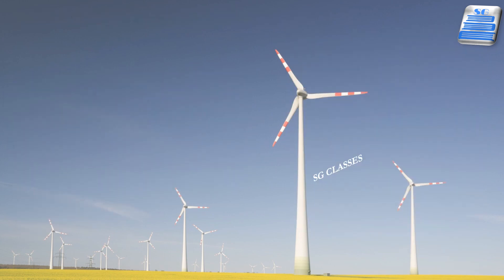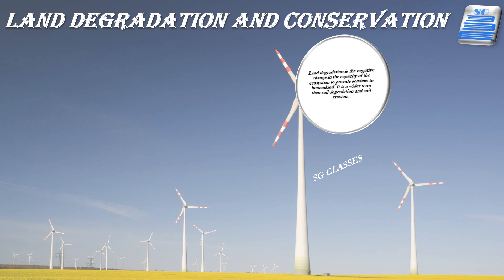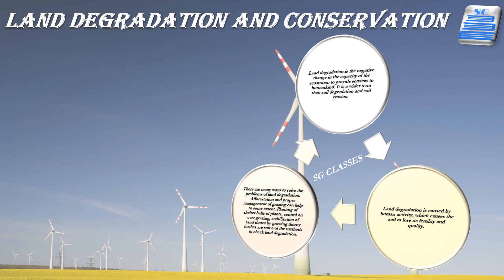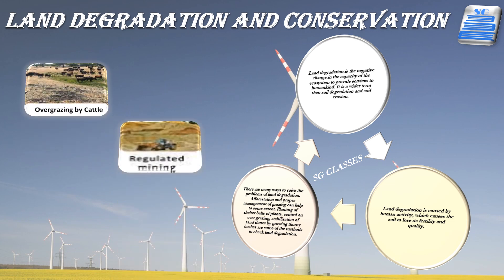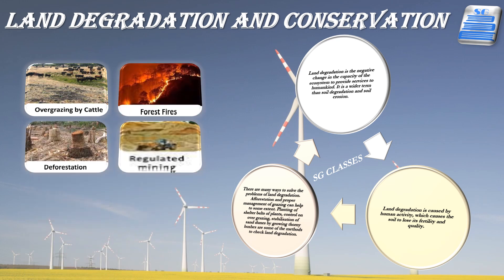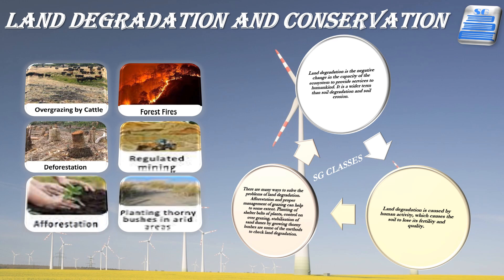Human activities such as deforestation, overgrazing, mining and quarrying have contributed significantly to land degradation. Mining sites leave deep scars on the land. Industrial effluents and waste have become a major source of land and water pollution. Ways to solve land degradation include afforestation, proper management of grazing, planting of shelter belts, stabilization of sand dunes by growing thorny bushes, proper management of wasteland, control of mining activities, and proper disposal of industrial effluents after treatment.